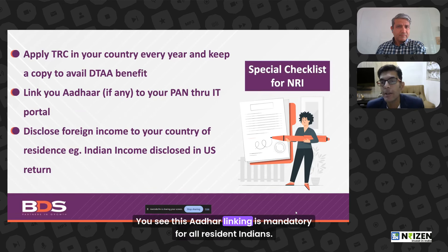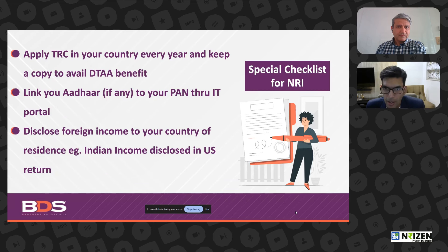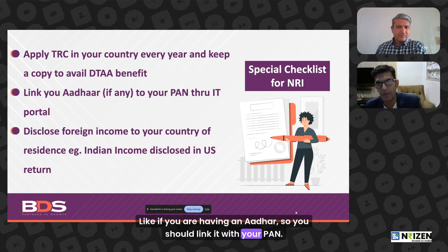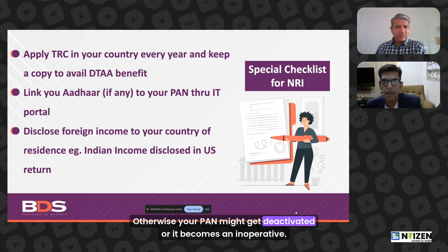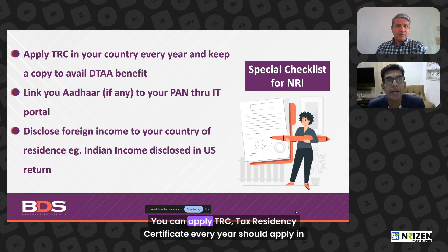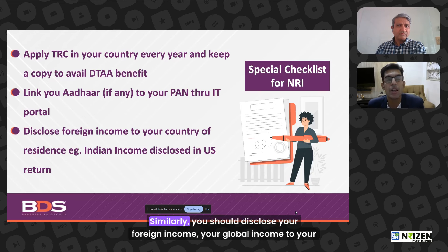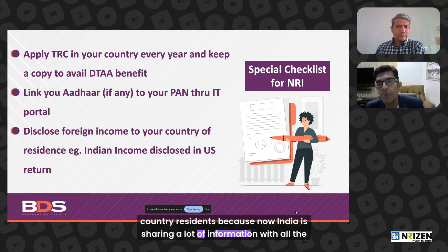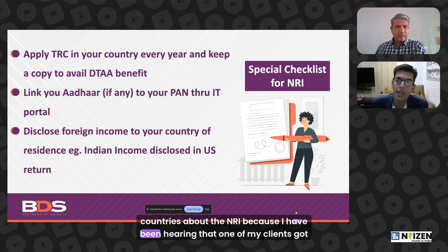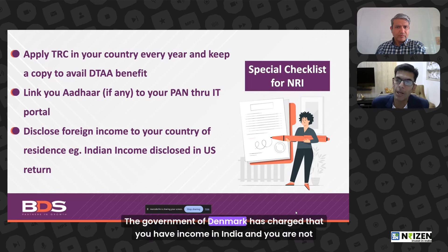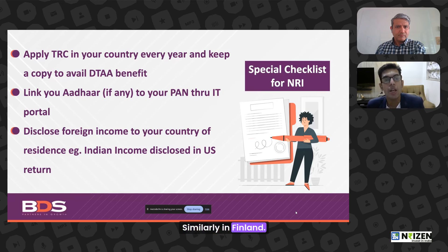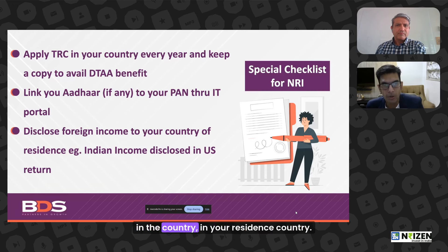Aadhaar linking is mandatory for all resident Indians. If you have an Aadhaar, link it with your PAN — otherwise your PAN might get deactivated or become inoperative. Apply for a Tax Residency Certificate (TRC) every year in your home country and compare whether your income tax rate is better or the DTAA rate is better. You should also disclose your foreign income and global income to your country of residence, because India is now sharing a lot of information with all countries. Clients have received notices in Denmark and Finland for undisclosed Indian income. In the US, all global income is taxable, so it is your obligation to disclose your Indian income in your residence country.